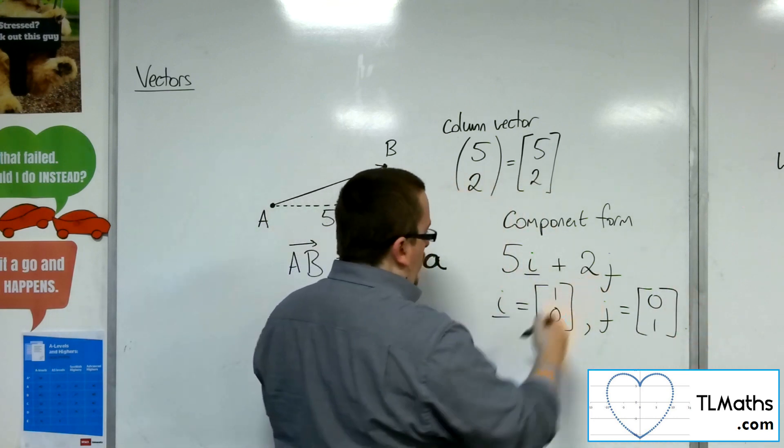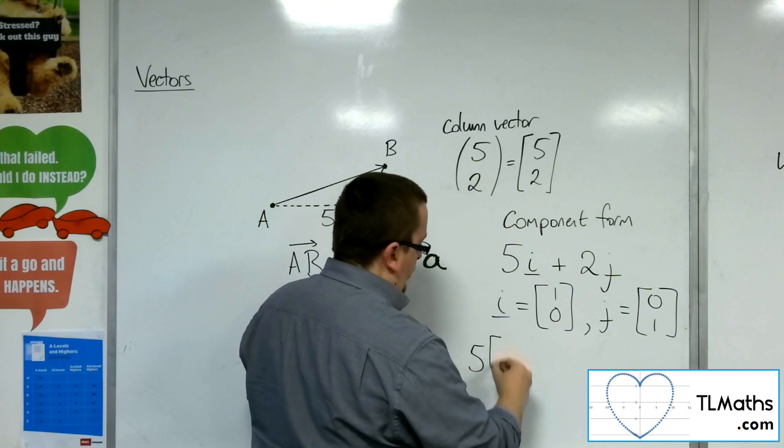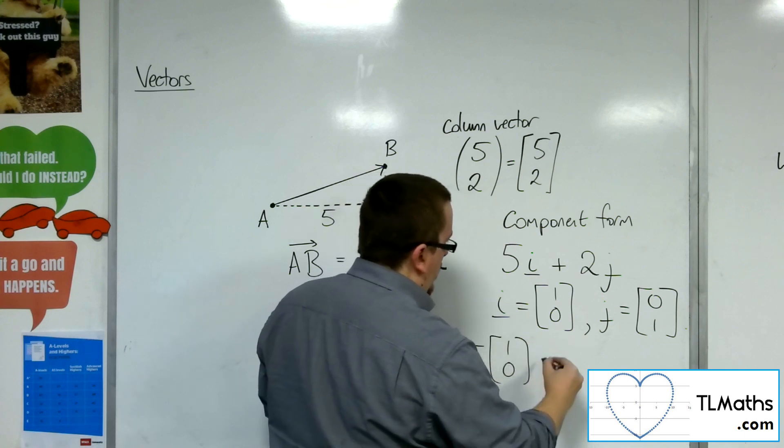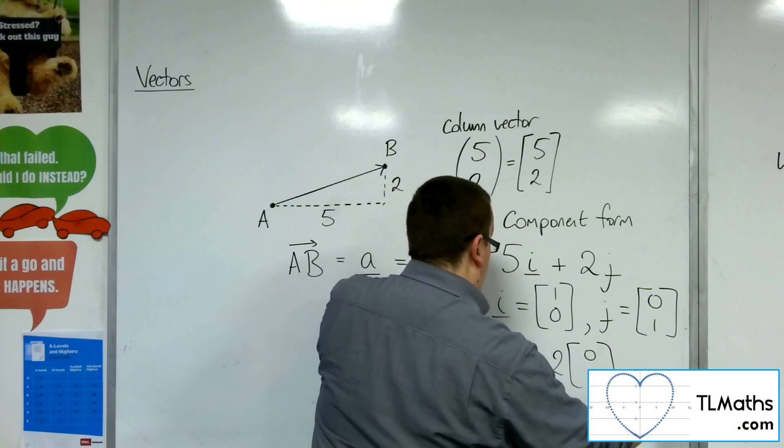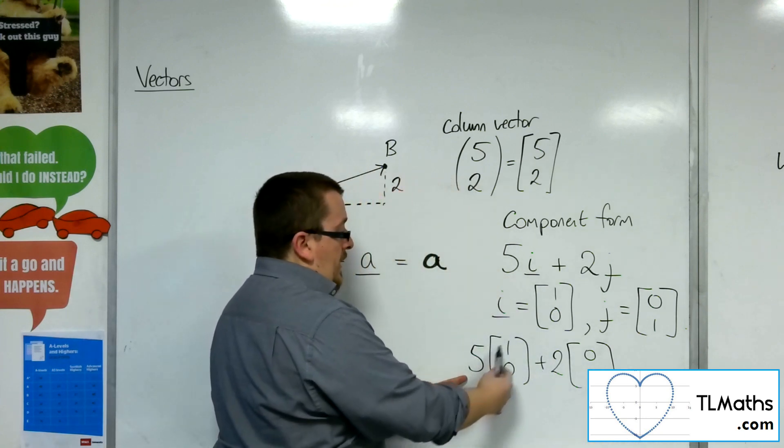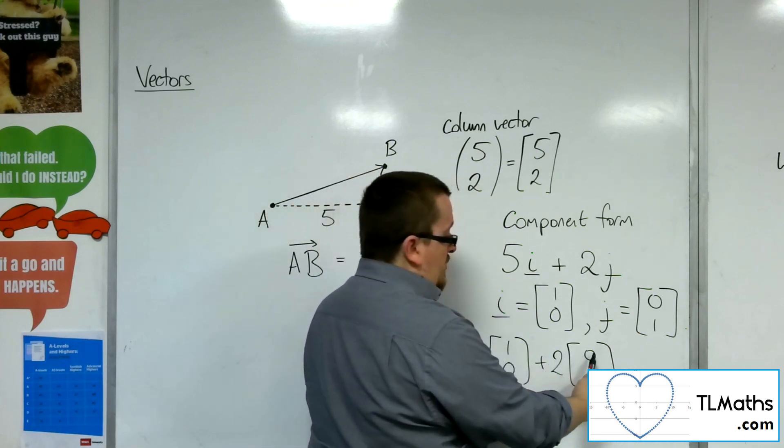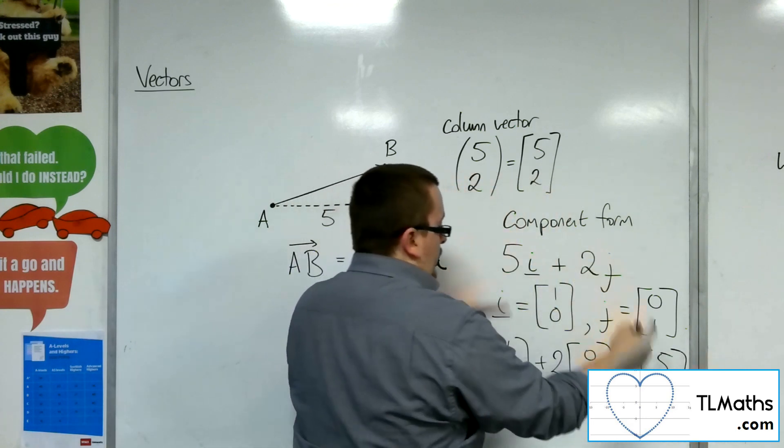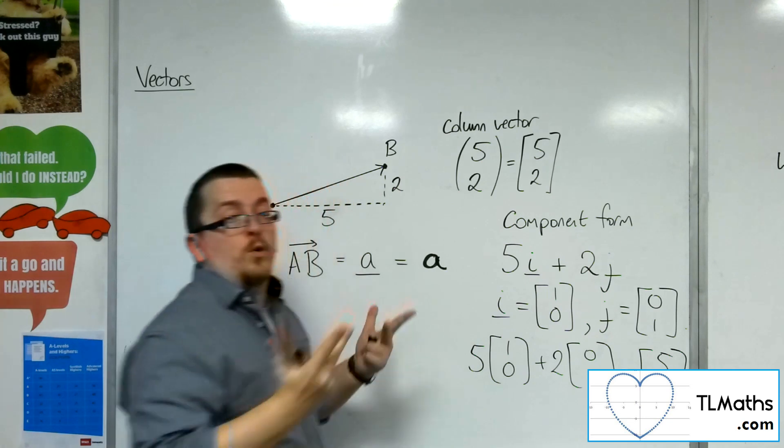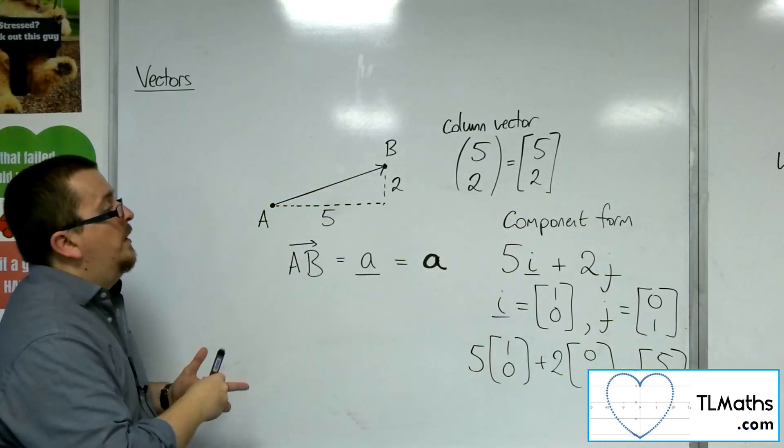So really, what you've got here is 5 lots of 1, 0, plus 2 lots of 0, 1. And so really, what you've got is 5, 0, plus 0, 2, which gets you 5, 2. So these two things are equivalent.